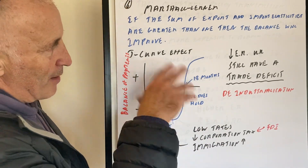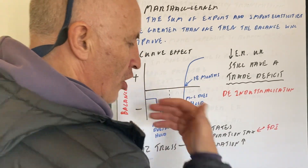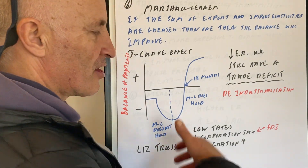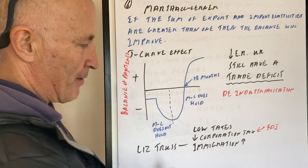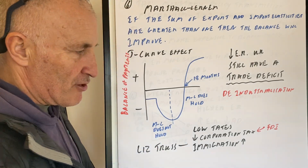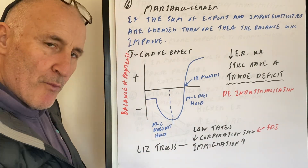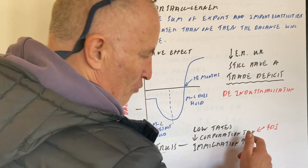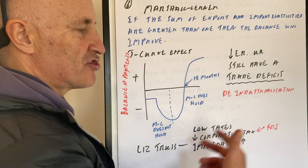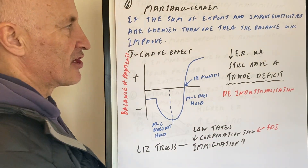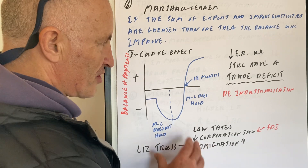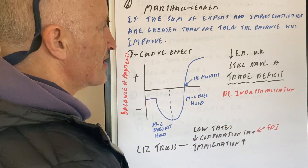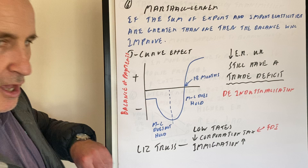Liz Truss's argument was about low corporation tax and immigration — around one million people coming in — which would create growth and cause the economy to take off. Low corporation tax would increase FDI, which would increase the underlying trend rate of growth. So the balance of payments is also dependent upon supply-side factors.